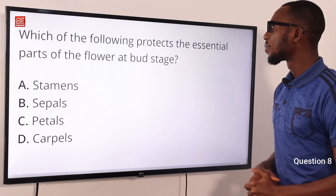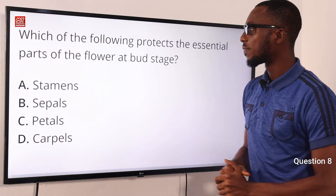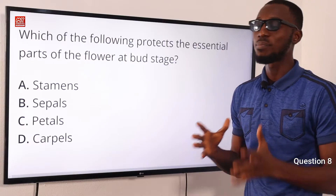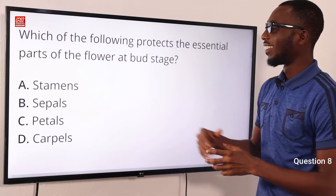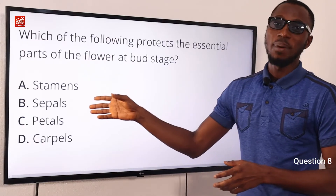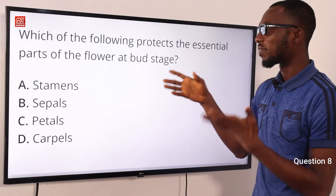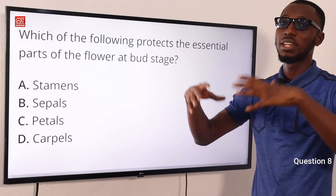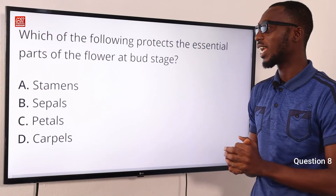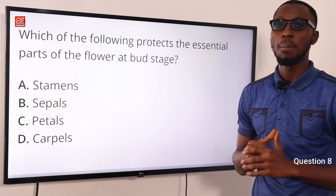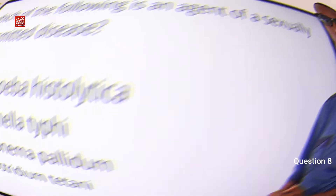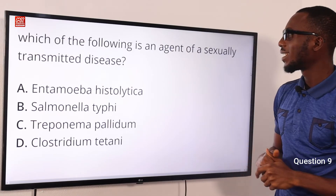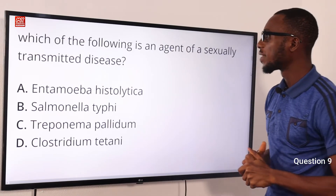Question 8: Which of the following protects the essential parts of the flower at the bud stage? That part is the sepals. The sepals provide support and protection to the flower bud before it finally opens up. The correct option is B: sepals.